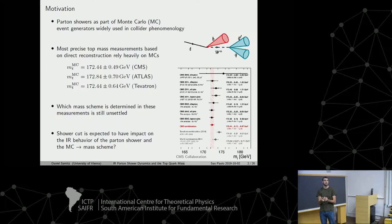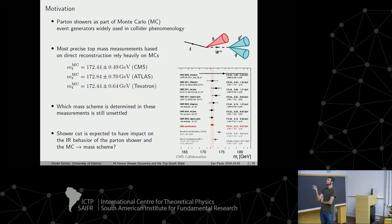The most precise top quark mass measurements nowadays at hadron colliders are based on direct reconstruction methods. You identify all the top quark decay products — the b-quark jet and the decay products of the W boson, which can be hadronic or leptonic — reconstruct this final state, and take the invariant mass. This is very sensitive to the top quark mass. The most recent results from ATLAS, CMS, and the Tevatron reach a precision of around half a GeV.